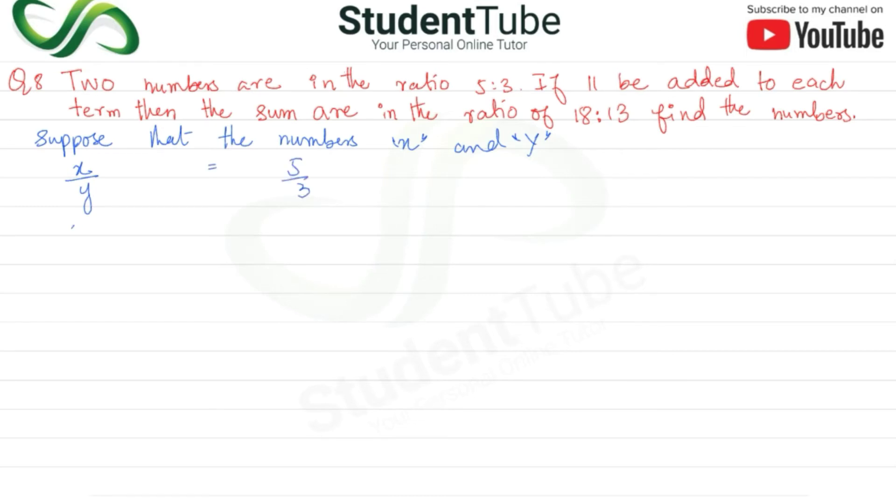Okay? Now, x is equal to 5y upon 3. Okay, equation 1. We have x to add x.